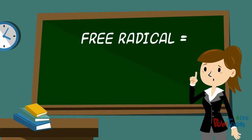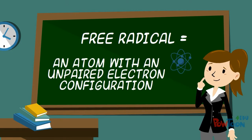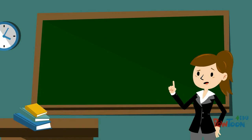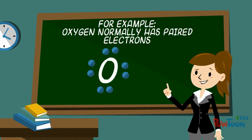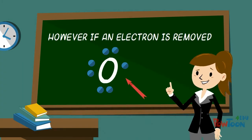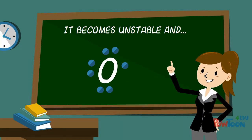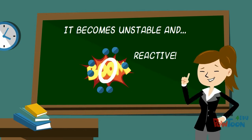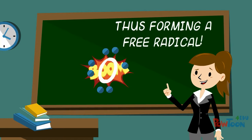A free radical is an atom with unpaired electron configuration. Oxygen normally has paired electrons. However, if an electron is removed, it becomes unstable and reactive, thus forming a free radical.